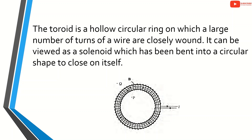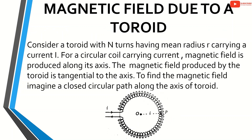The toroid is a hollow circular ring on which a large number of turns of a wire are closely wound. It can be viewed as a solenoid which has been bent into a circular shape to close on itself. Magnetic field due to a toroid.